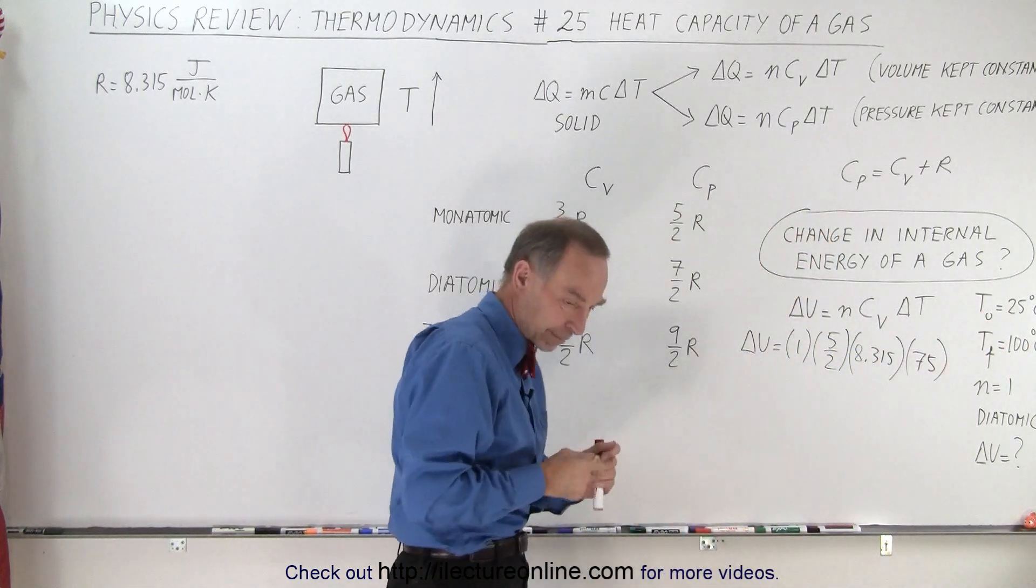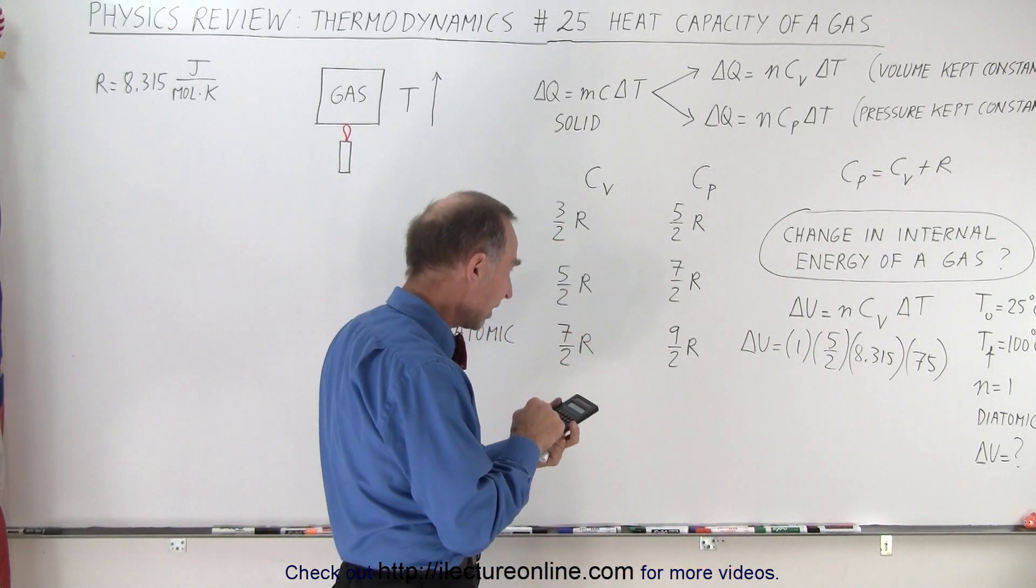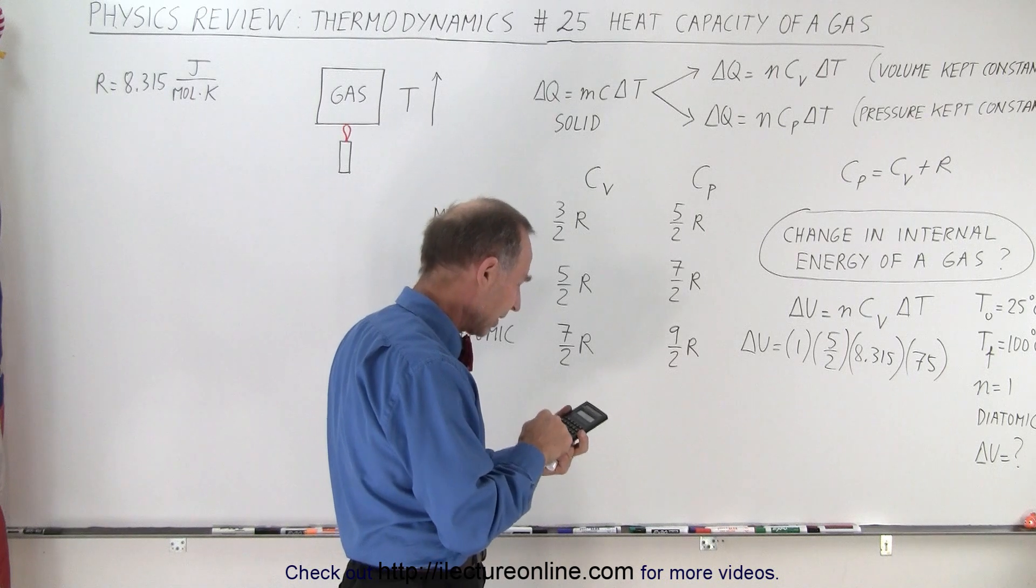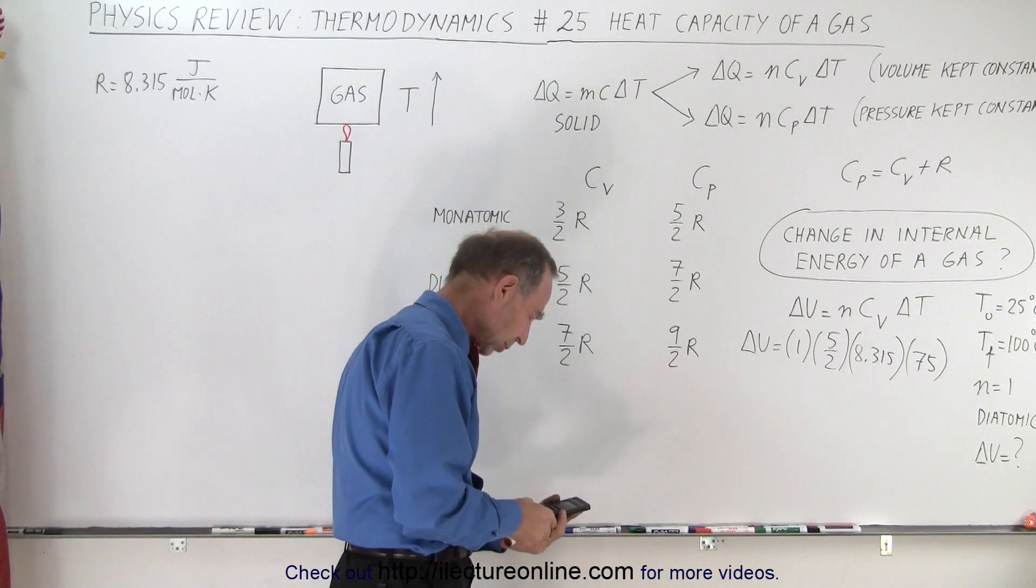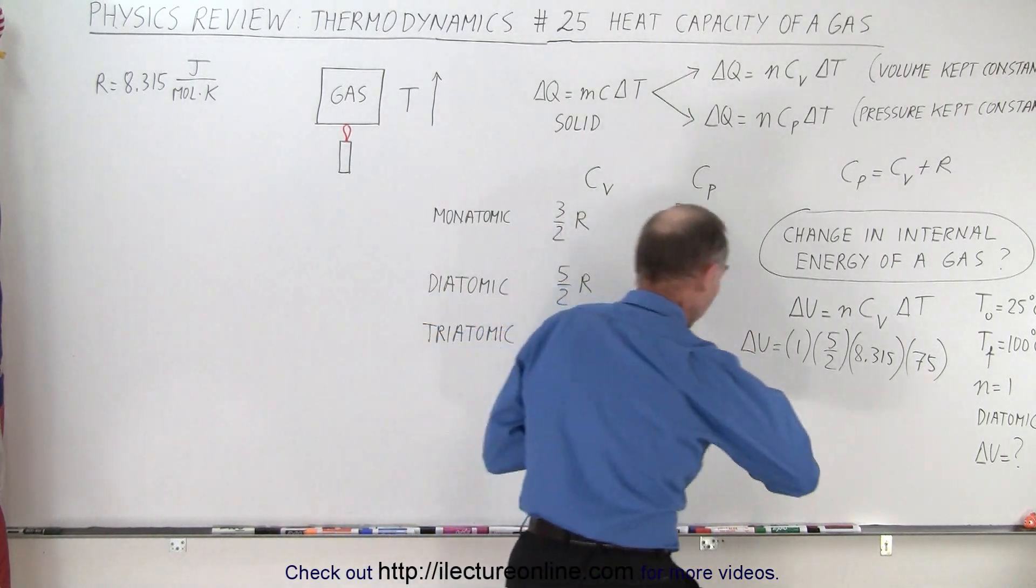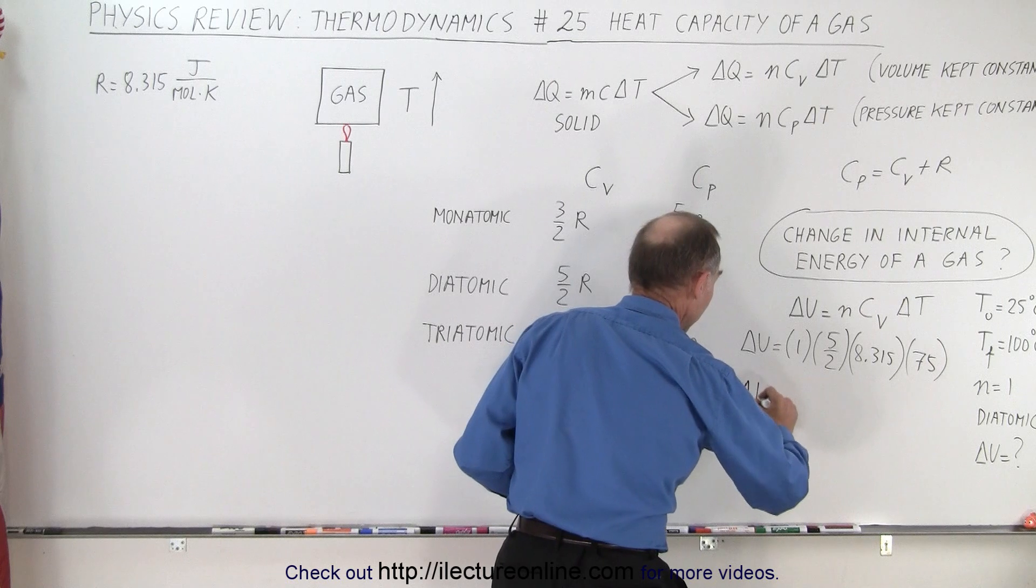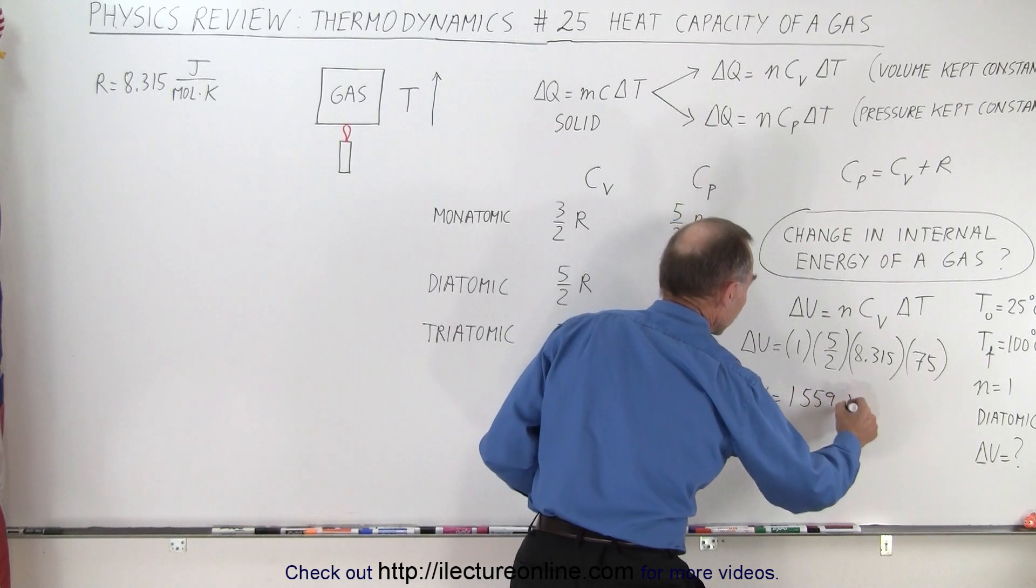So how much is that? That's 2.5 times 8.315 times 75. And that's 1,559 joules. So the change in internal energy would be 1,559 joules.